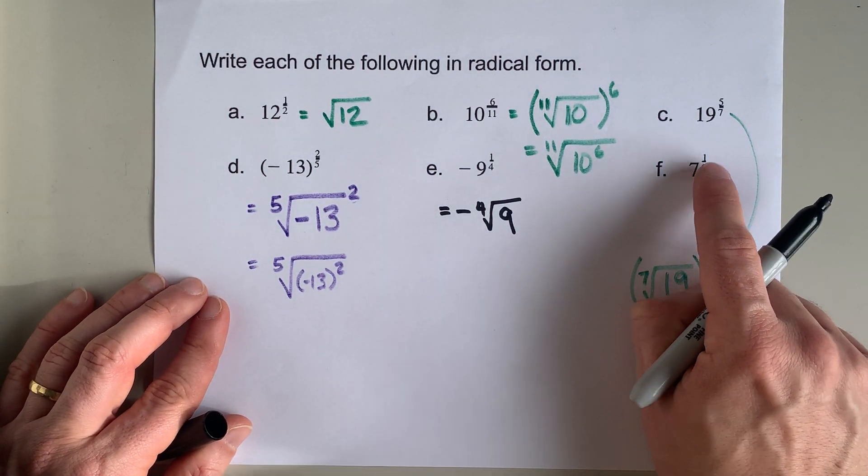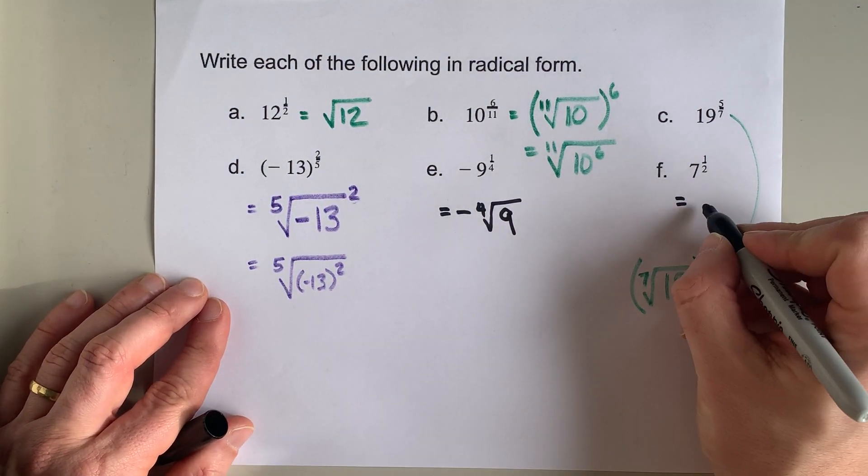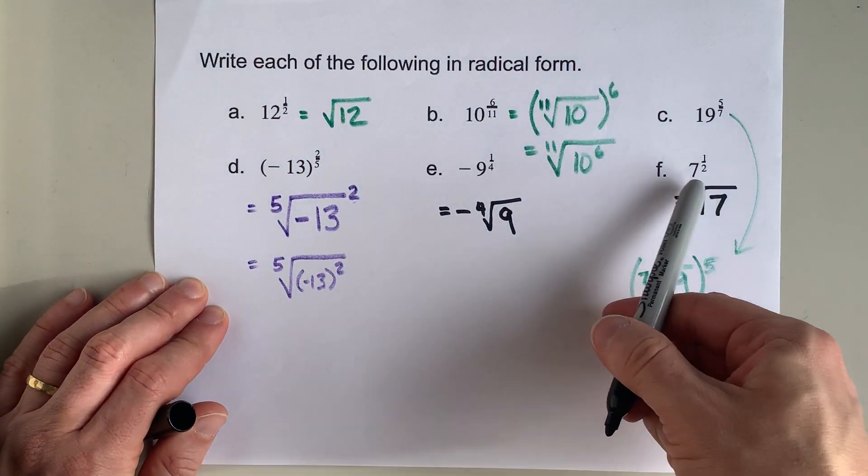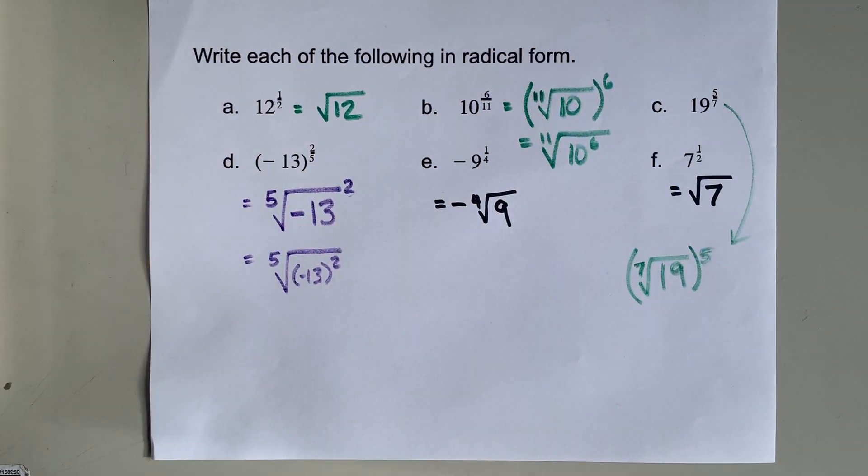And lastly, 7 to the power of a half. I should have started with that one. That's the same as the square root of 7. Exactly the same as A, just with a different base.